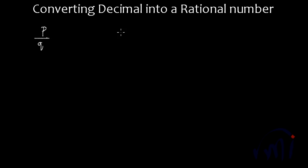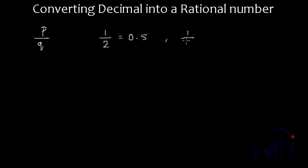Suppose if we have a rational number like 1 by 2. If we divide 1 by 2, we are going to get 0.5. So 0.5 is the decimal representation of 1 by 2. Similarly, if I do 1 by 8, this will be equal to 0.125. This is the decimal representation of 1 by 8.